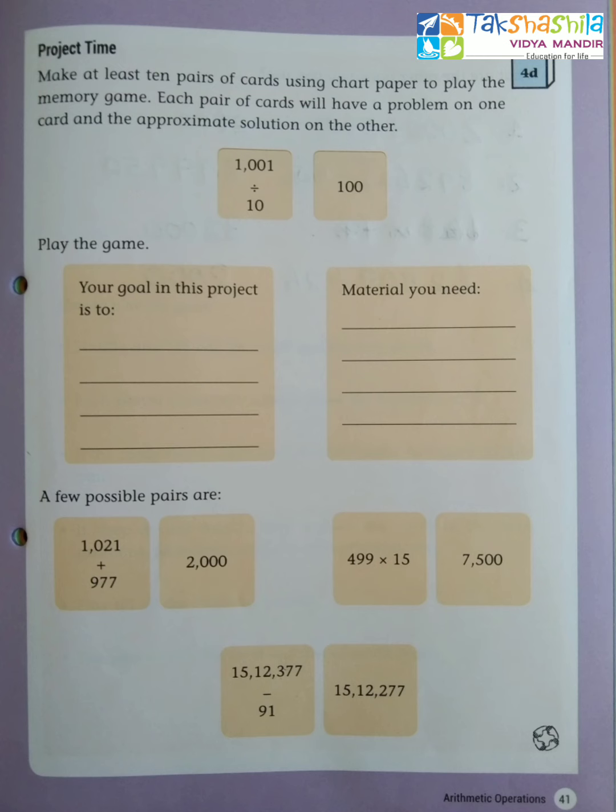Children, for this we have to make at least 10 pairs of cards using your chart paper. In one card you have to write the actual sum. Here one example sum has been given for you: 1001 divided by 10, and in another card they have taken as 100.